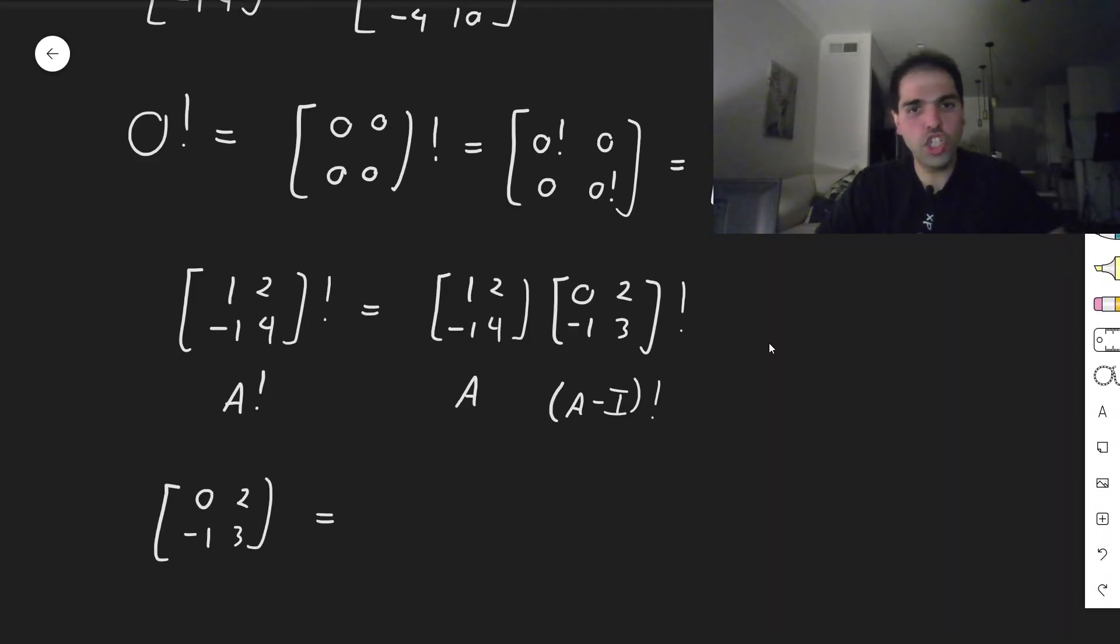[0, 2; -1, 3], because we shifted it by the identity matrix. It turns out that the eigenvectors stay the same. So it's still, what was it? It's still [2, 1; 1, 1], but just the eigenvalues get shifted by 1. So it's not [2, 0; 0, 3], but [1, 0; 0, 2], and then [2, 1; 1, 1] inverse.